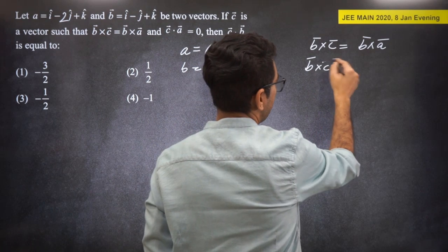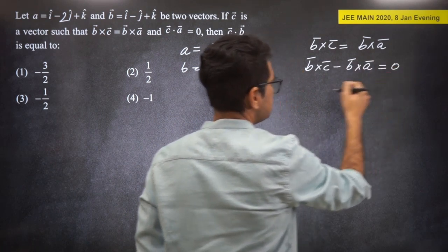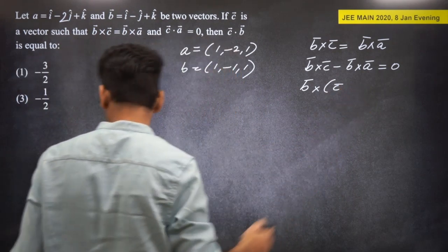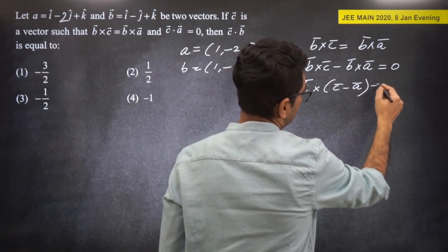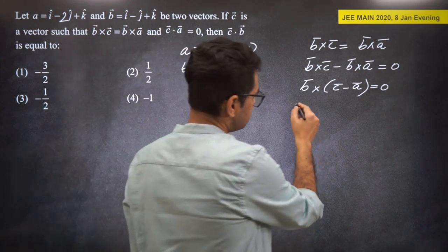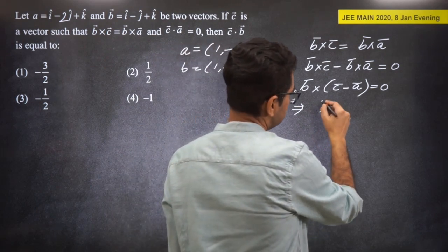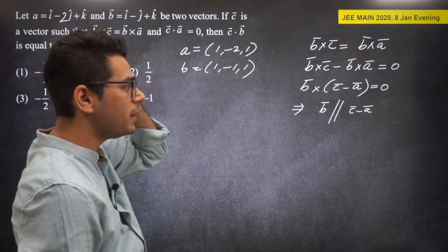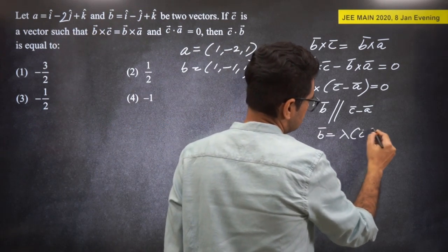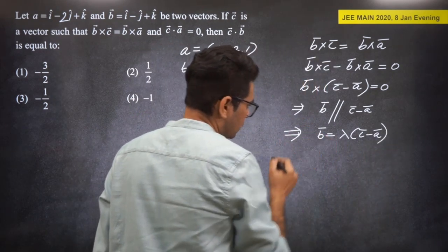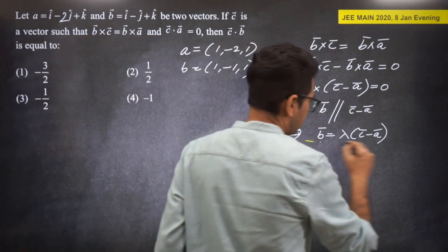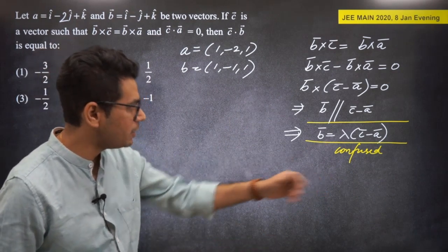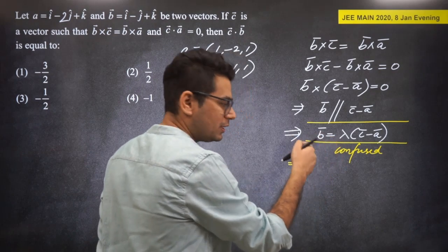Since B×(C - A) = 0, vectors B and (C - A) are parallel. This means C - A = lambda*B, so C = A + lambda*B. This is a pattern-based result used frequently. Note: instead of writing lambda on one side, we write C = A + lambda*B for clarity.